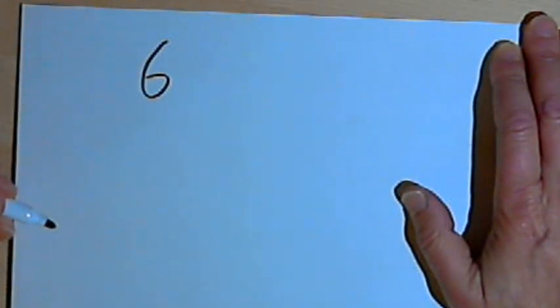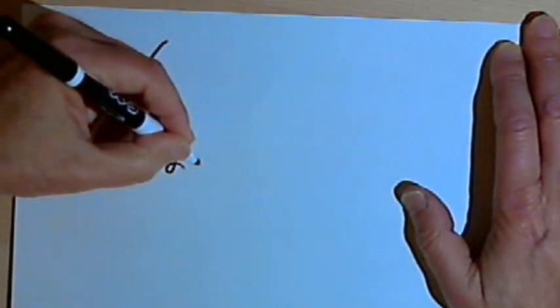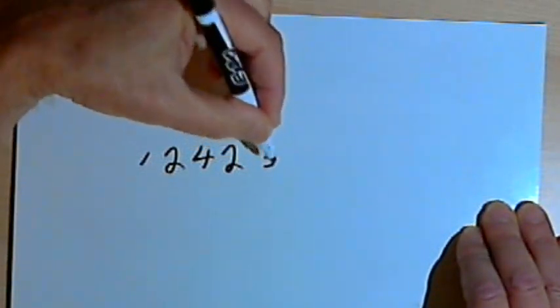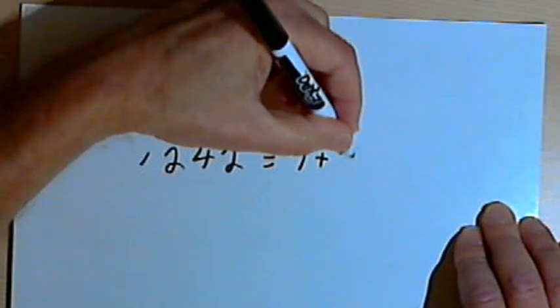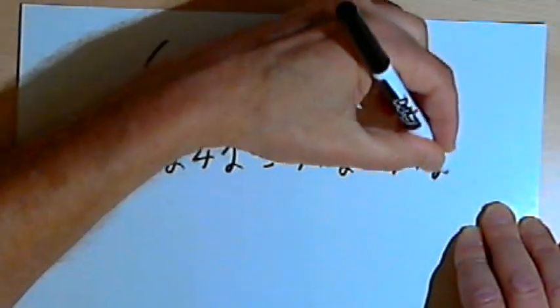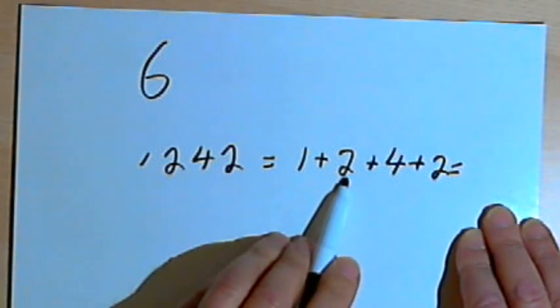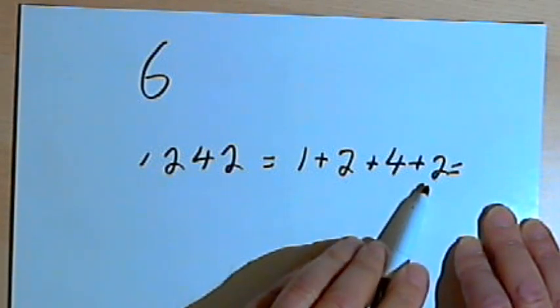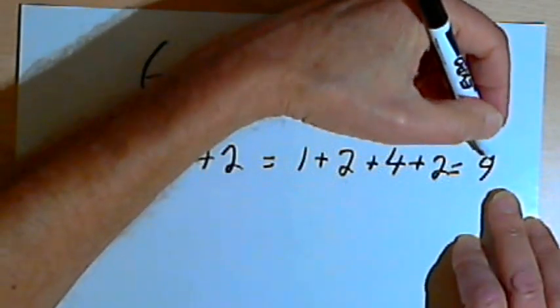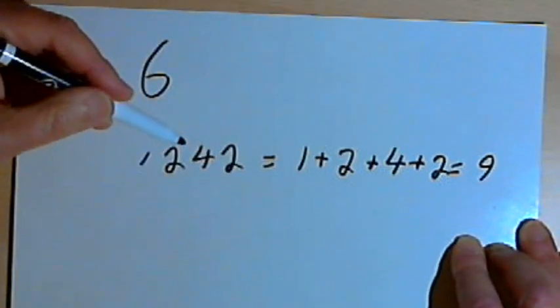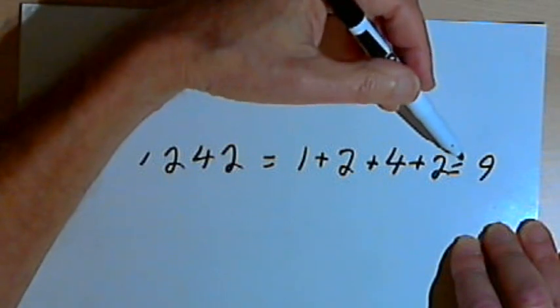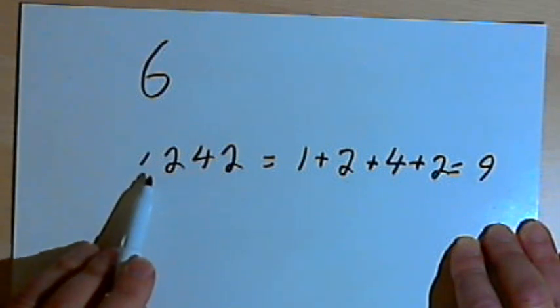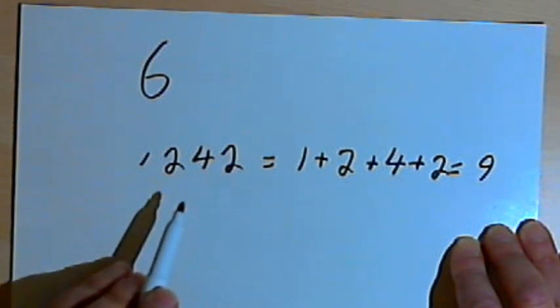So if I have a number like 1,242, let's see what happens. I'll add up the digits. 1 plus 2 plus 4 plus 2. So 1 plus 2 is 3, plus 4 more is 7, plus 2 more is 9. So I know, by the way, that this number must be divisible by 9. But I just wanted to know if it was divisible by 3. Which it is, because I ended up with a 3, a 6, or a 9. And it's an even number. So that means I can divide 1,242 by 6.